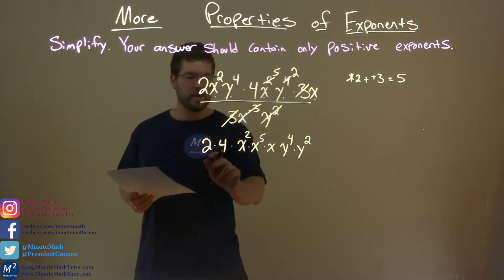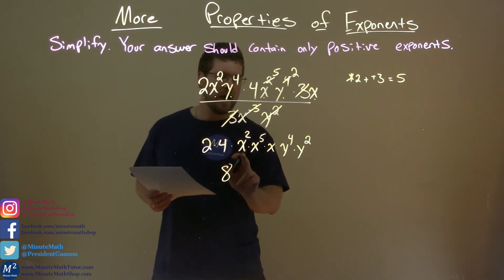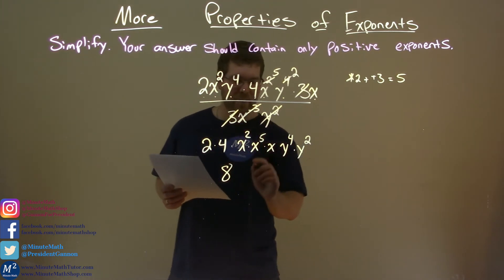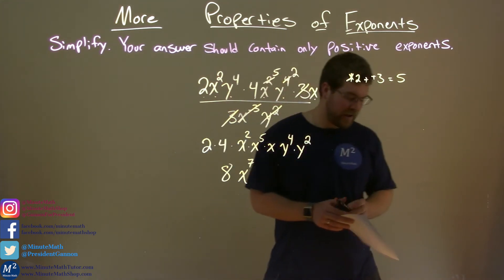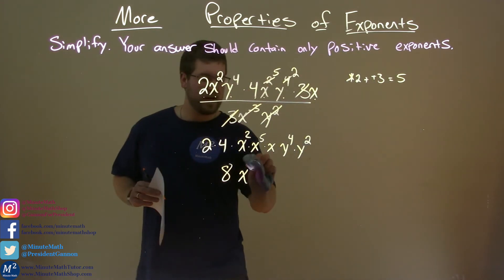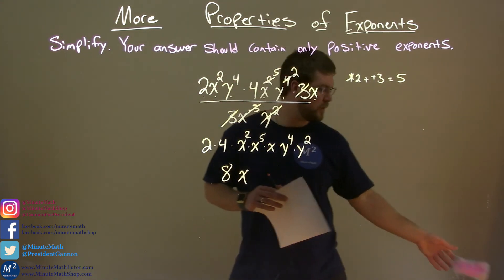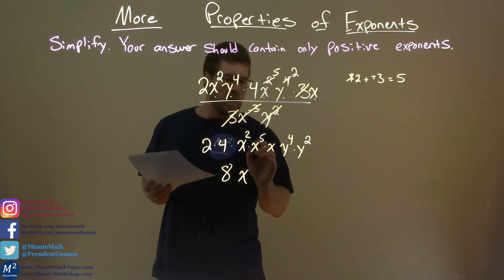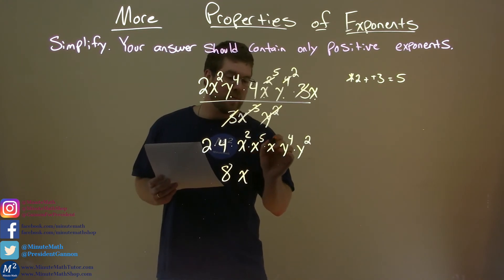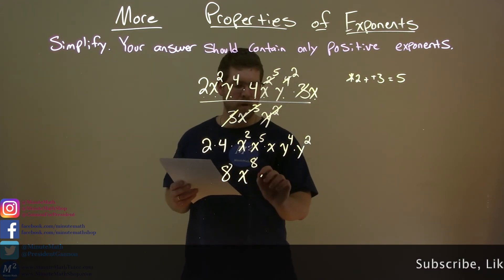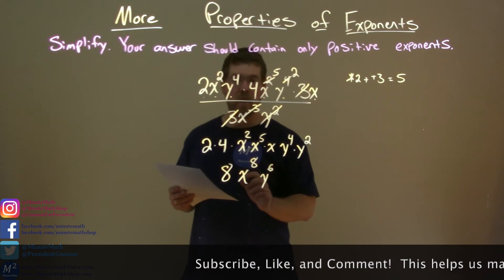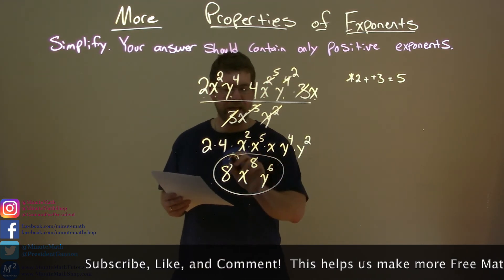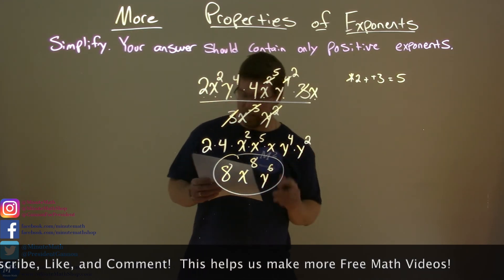Let's simplify it. 2 times 4 is 8. x squared times x to the fifth, add the exponents, x to the seventh power. Oh, don't forget the other x. Almost did. Classic mistake. Good thing I caught it before I finished the video. We have x to the seventh plus another one here, which is x to the eighth power. And then our y's, same base: 4 plus 2 is 6. So now our final answer is 8x to the eighth power y to the sixth power.